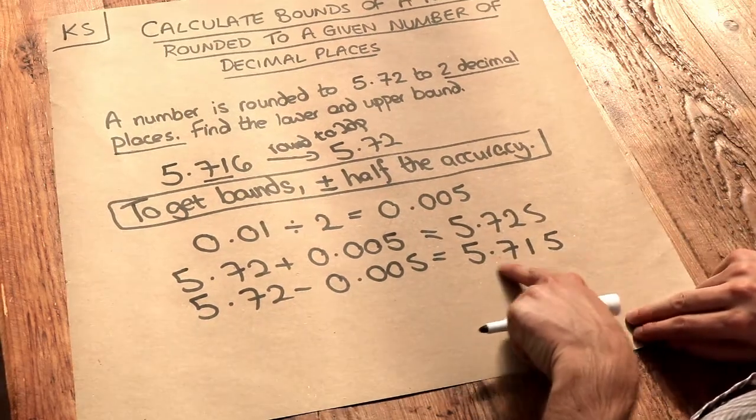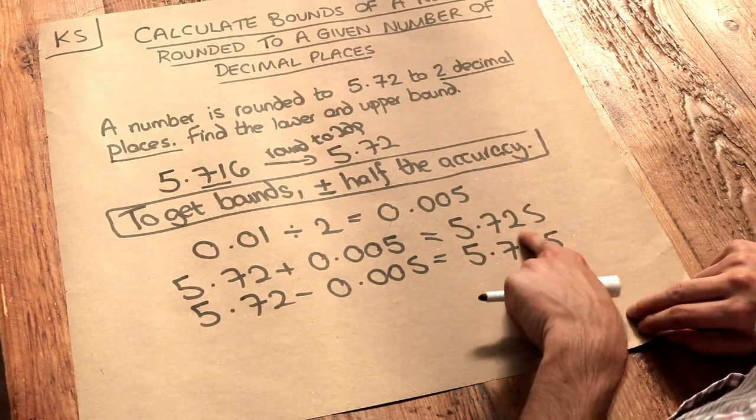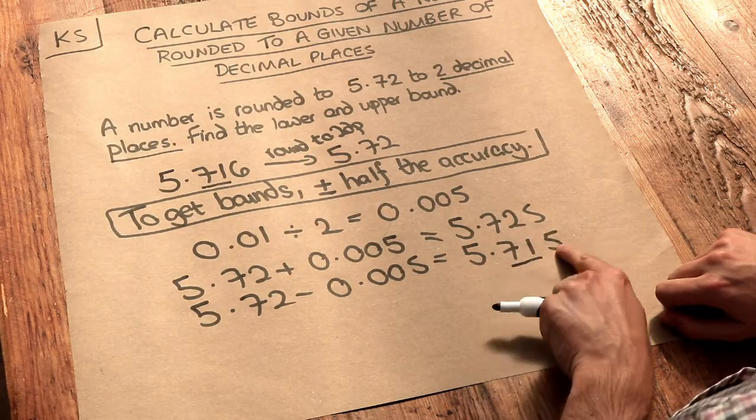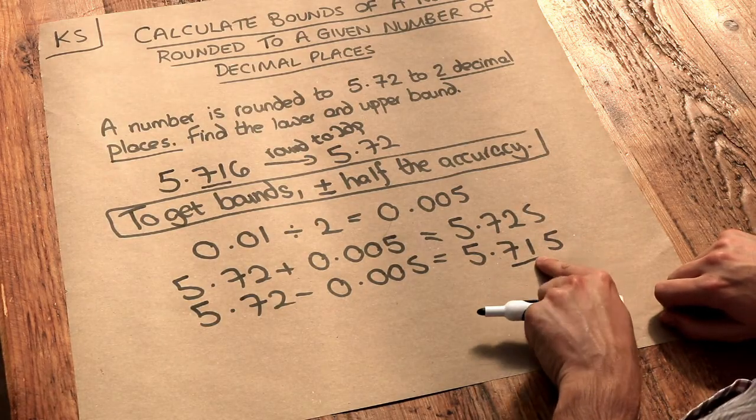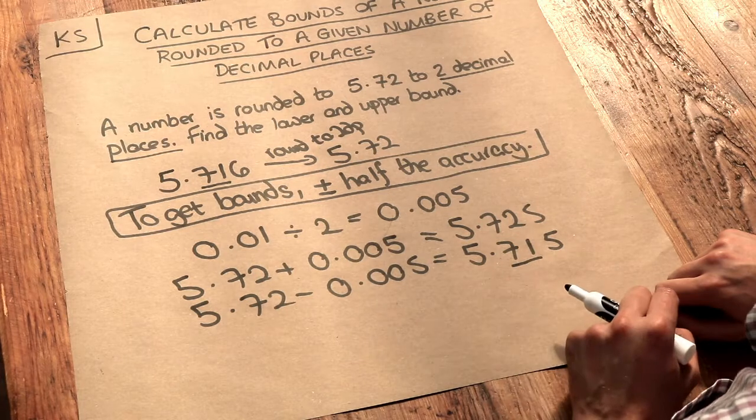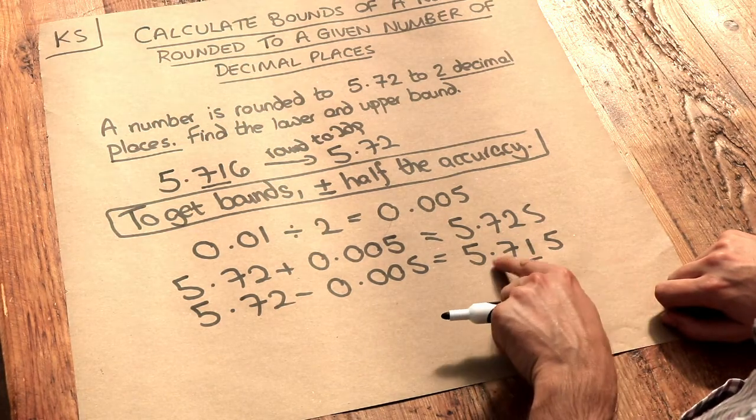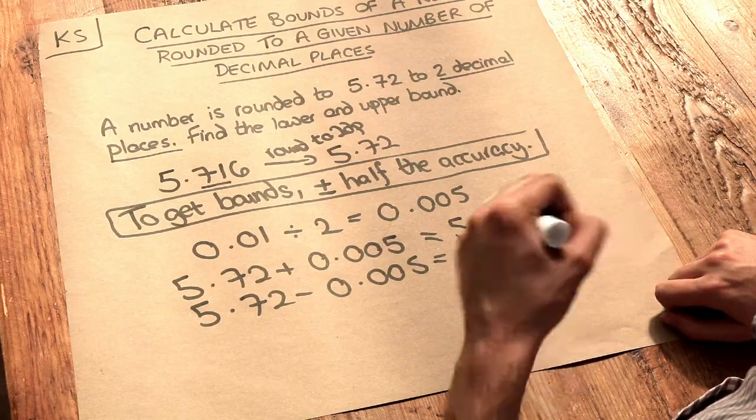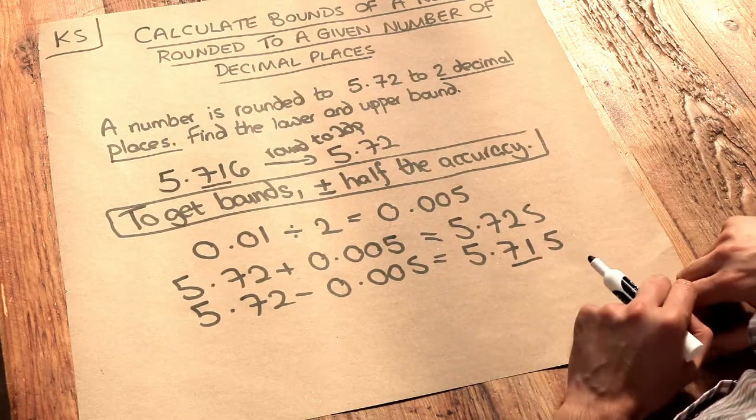Now indeed when we round this number here to two decimal places we look at the first two digits. Is that five or above? Yes. So that goes up to two. That would be 5.72 to two decimal places and that can't be any lower because if it was 5.714 then you would actually get 5.71 to two decimal places.